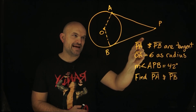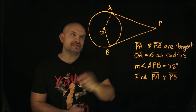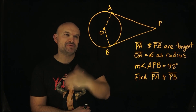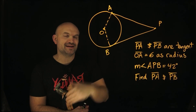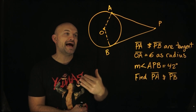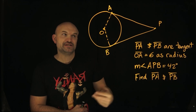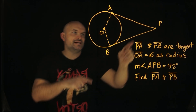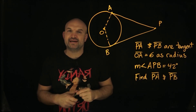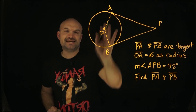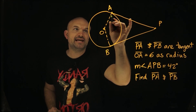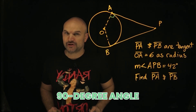So the first one: PA and PB are tangent to the circle. The next thing students get wrong is remembering the rules. There are a lot of rules that happen when we have lines that are tangent. This line, PA, is tangent to the circle. What is one thing that happens when we have a line tangent to the circle? At the point where it is tangent, it creates a 90-degree angle.